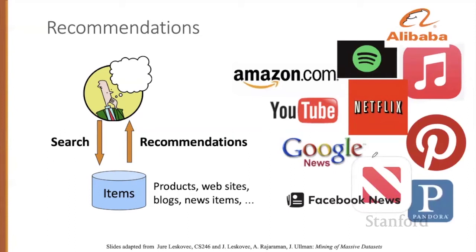Sellers of products like Amazon or Alibaba, news aggregator sites like Apple, Facebook, Google, video sites like YouTube or Bilibili, providers of movies or music on demand like Netflix, Spotify, and Apple Music all use recommender systems.